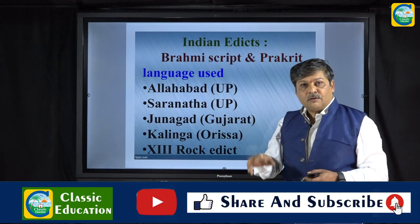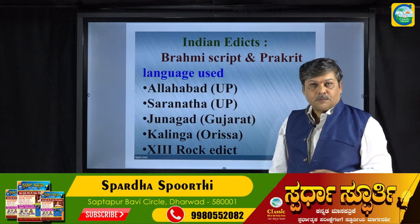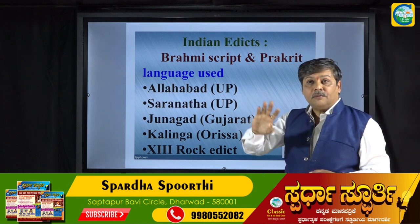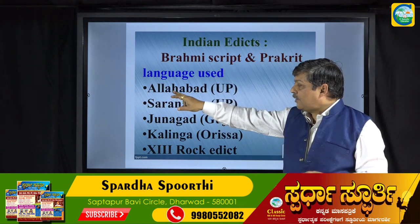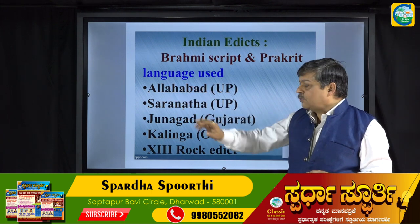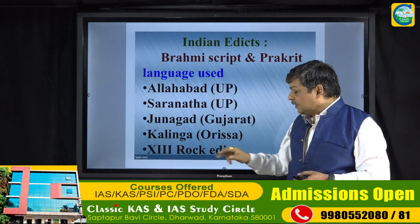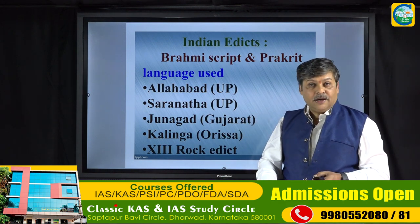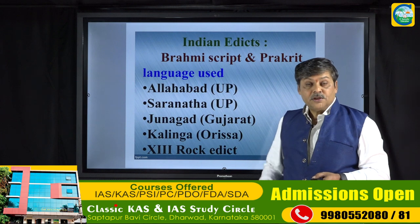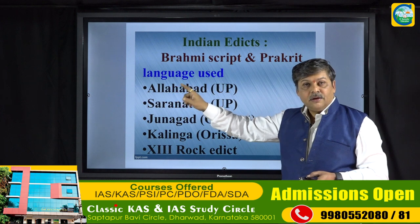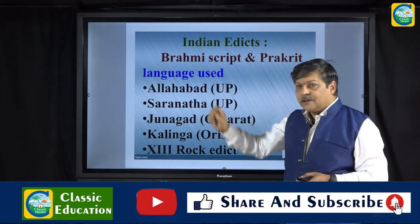Now coming to the important Edicts of Ashoka which are in India — Brahmi script and Prakrit language is very common in Indian Edicts. We have the Allahabad Edict, the Sarnath Edict, the Junagadh Edict, the Kalinga Edicts, and the Thirteenth Rock Edict. The Allahabad Edict is called the Queen's Edict, as it mentions the name of Ashoka's queen as Karawaki and the donation she made.